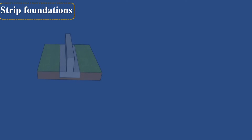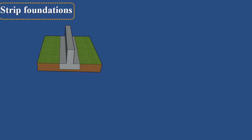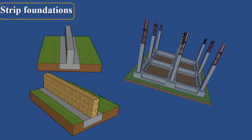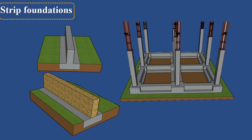Strip foundations or strip footings are a type of shallow foundation that is used to provide a continuous, level, or sometimes stepped strip of support to a linear structure such as a wall or closely spaced rows of columns built centrally above them.